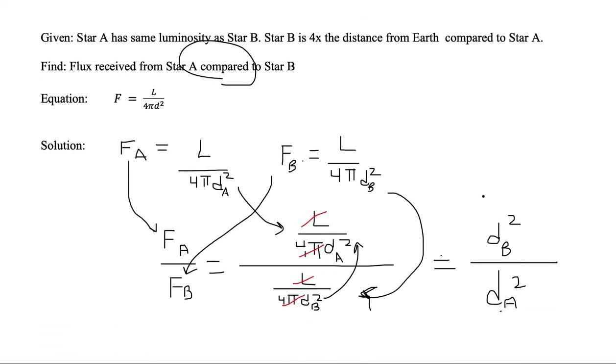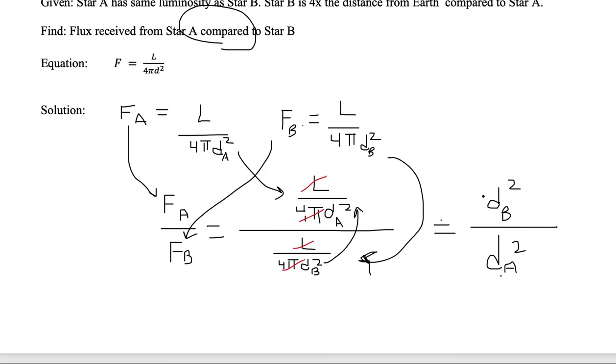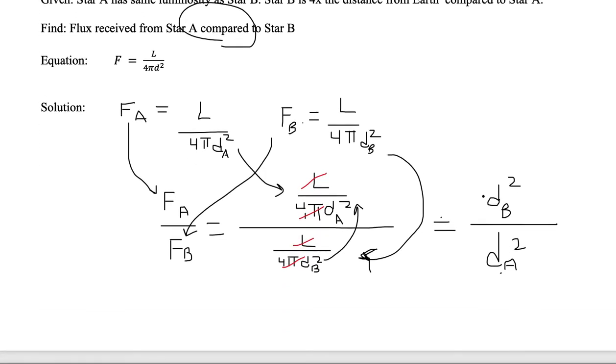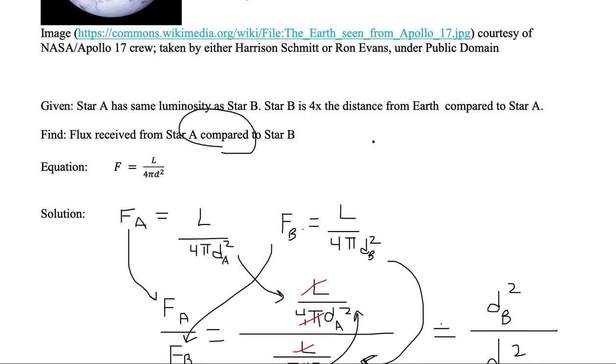Now we can't simplify it anymore, but one thing we do have that we did not put in here was that we have a difference between dA and dB that is known. So we have that Star B is 4 times the distance compared to Star A.